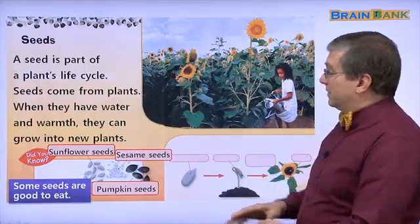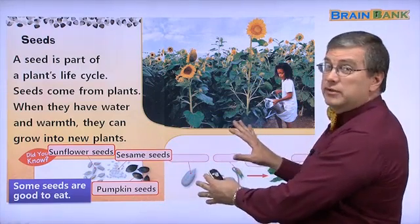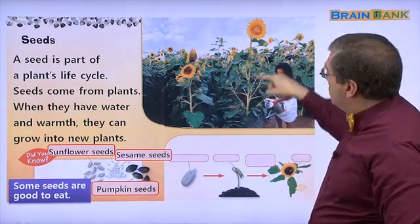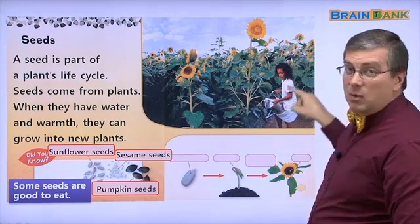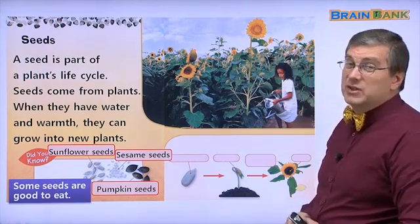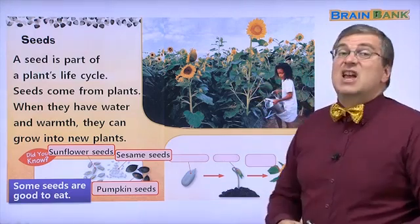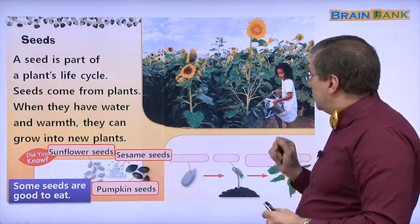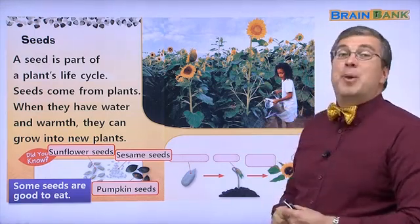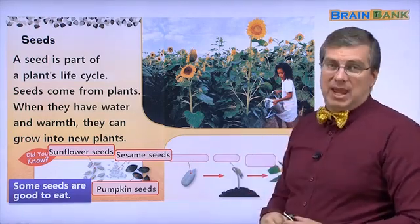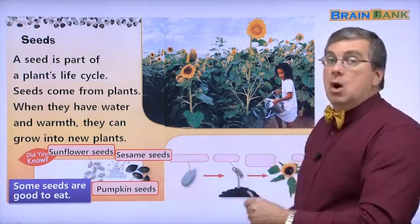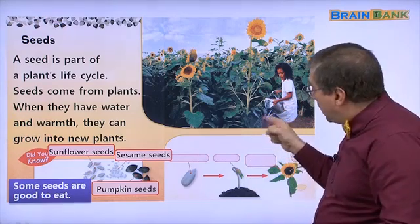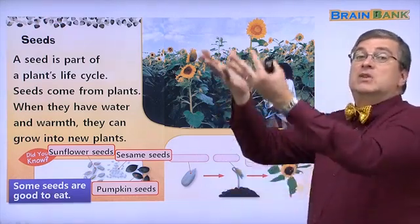Here we see a lot of pictures and some text. Look at this picture here first. What do you see? Do you know these types of flowers? These are sunflowers. And this girl, what is she doing? What's inside the pail? It's water.